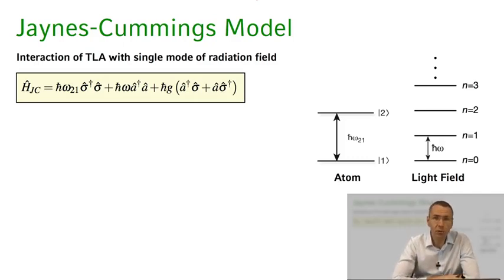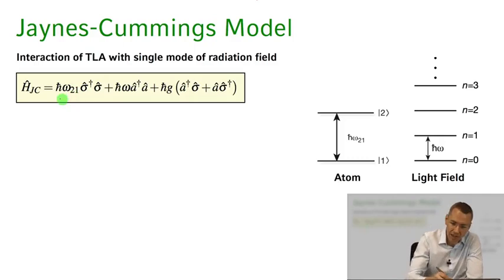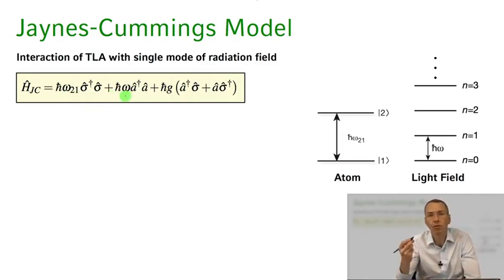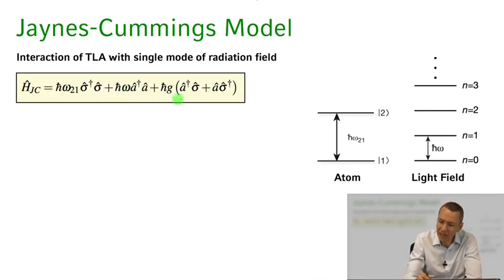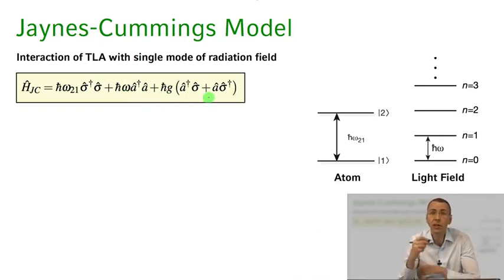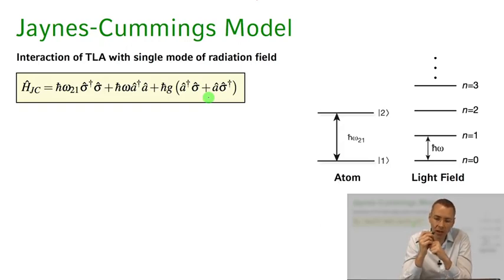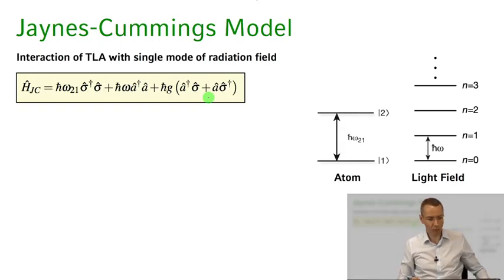Here is the Jaynes-Cummings Hamiltonian, which describes the interaction of our atom given by this Hamiltonian here, and the radiation field given by this Hamiltonian here. I've dropped the index k because we're discussing interaction with a single radiation field mode, and I've also dropped the ground state energy plus one-half. This is the light-atom interaction Hamiltonian derived in previous lectures, with absorption and emission processes in the rotating wave approximation.